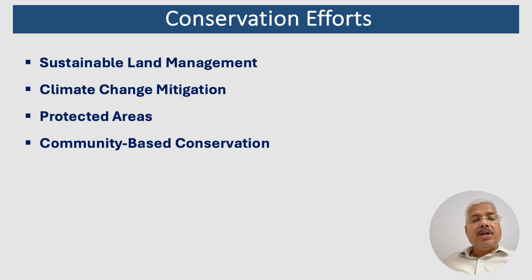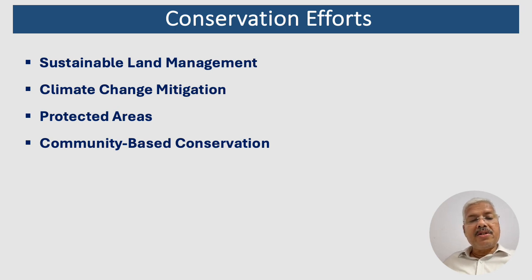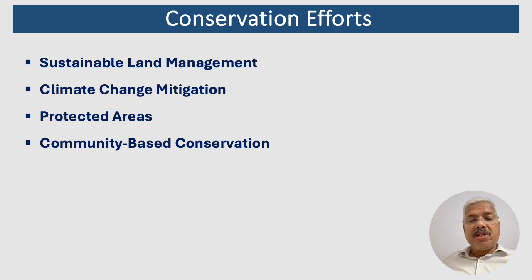To address these threats, it is essential to implement effective conservation strategies, such as: sustainable land management — promoting sustainable agricultural practices, reducing overgrazing, and restoring degraded lands; climate change mitigation — reducing greenhouse gas emissions to slow climate change and mitigate its impact on desert biomes; establishing and managing protected areas to conserve biodiversity; and involving local communities in conservation efforts to promote sustainable practices and raise awareness about the importance of desert ecosystems. By addressing these threats and taking proactive conservation measures, we can help protect the unique and valuable desert biomes for future generations.